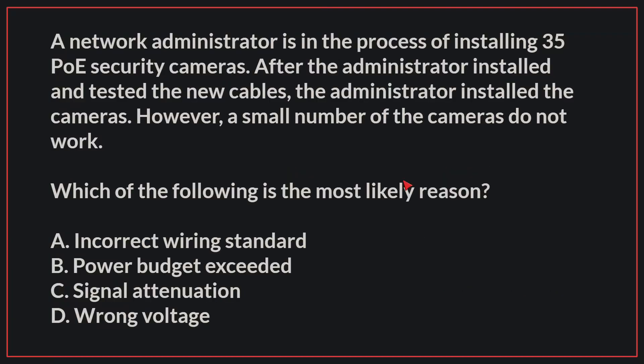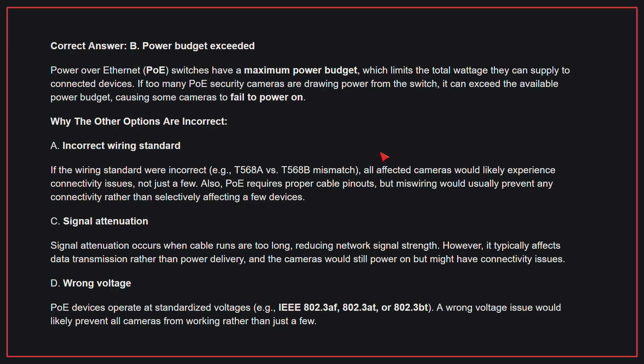A network administrator is in the process of installing 35 PoE security cameras. After the administrator installed and tested the new cables, the administrator installed the cameras. However, a small number of the cameras do not work. Which of the following is the most likely reason? The correct answer is B: Power budget exceeded. Power over Ethernet switches have a maximum power budget, which limits the total wattage they can supply to connected devices. If too many PoE security cameras are drawing power from the switch, it can exceed the available power budget, causing some cameras to fail to power on.